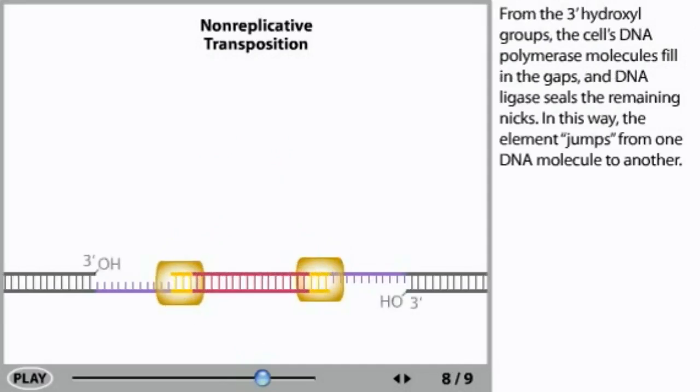From the 3' hydroxyl groups, the cell's DNA polymerase molecules fill in the gaps and DNA ligase seals the remaining nicks. In this way, the element jumps from one DNA molecule to another.